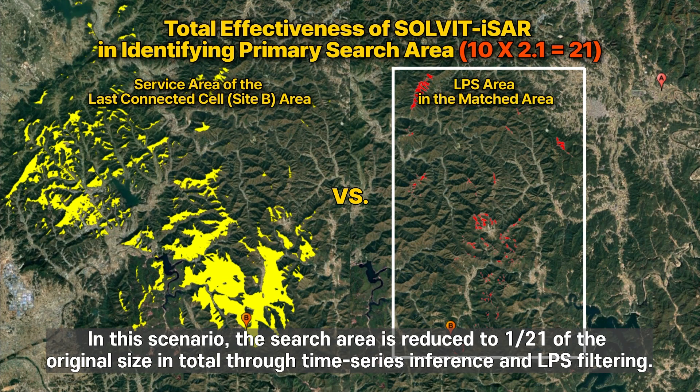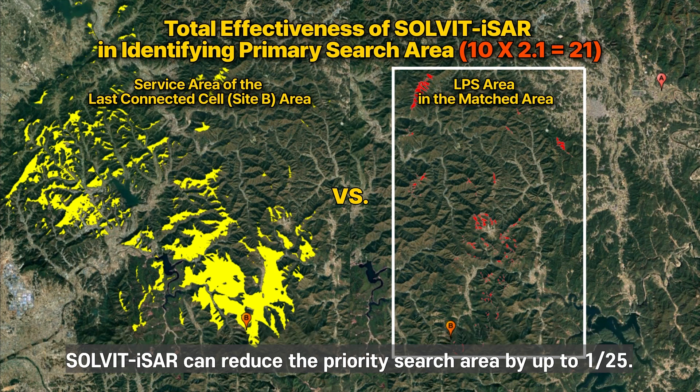In this scenario, the search area is reduced to one-twenty-first of the original size in total through time series inference and LPS filtering. Solvet-ASR can reduce the priority search area by up to one-twenty-fifth.